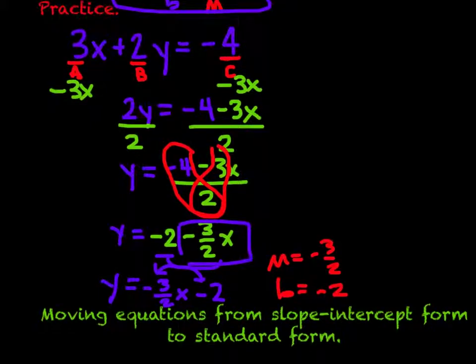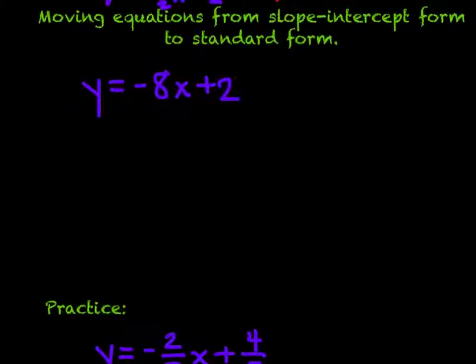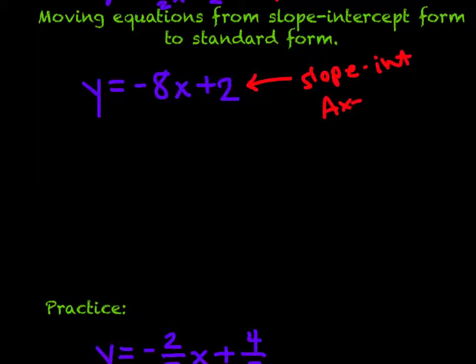So we also need to be able to move from slope-intercept form into standard form. We can see that this equation is currently in slope-intercept form. We need to move it into standard form. So we need to get this to look like Ax plus By equals C. Whereas as of right now, I can see what my y-intercept is and I can see what my slope is. So we need to actually just do a little bit of math.